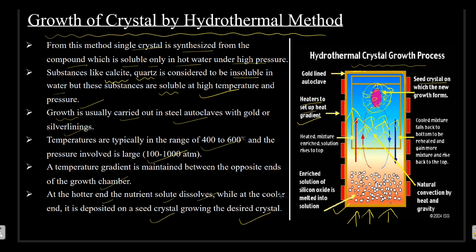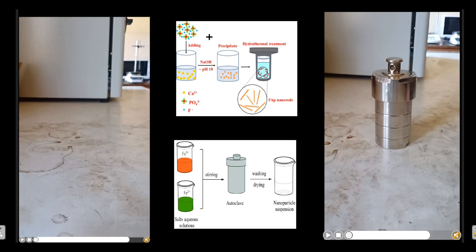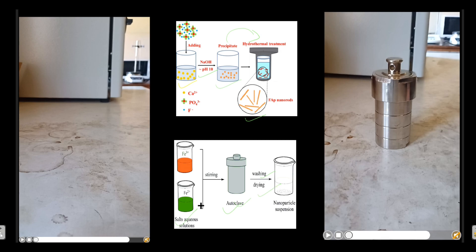Now let's see how an actual hydrothermal apparatus is used. A beaker is taken and a solution is made — an alkali can be added to make it alkaline, producing a precipitation. This is then put in the hydrothermal apparatus where it is heated, and as a result nanoparticles may be created. Not only crystals — nanoparticles, quantum dots, or electrodes can also be prepared by this method. Similarly, a salt aqueous solution is prepared, put in an autoclave, and heated in the hydrothermal apparatus to form the required nanoparticle, which can then be washed and dried.